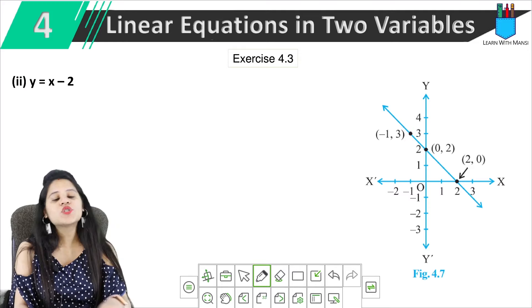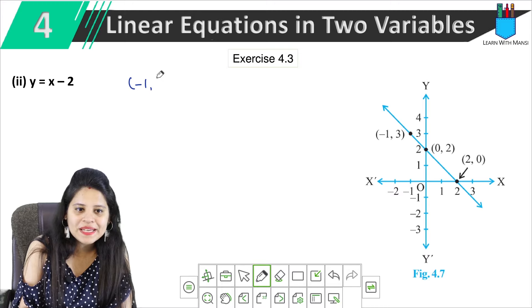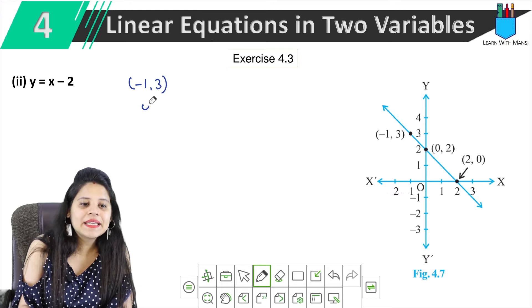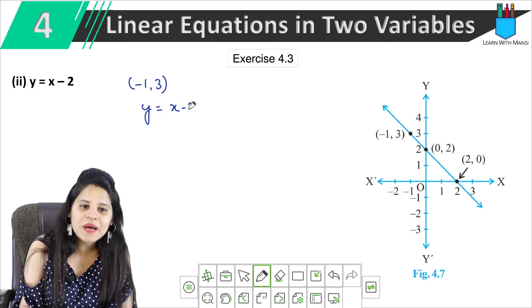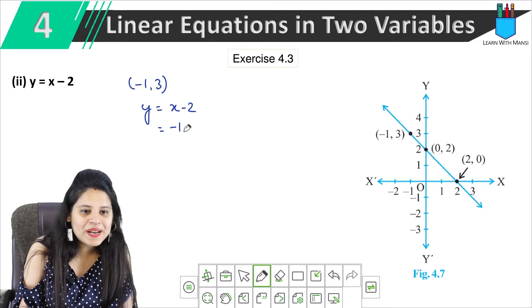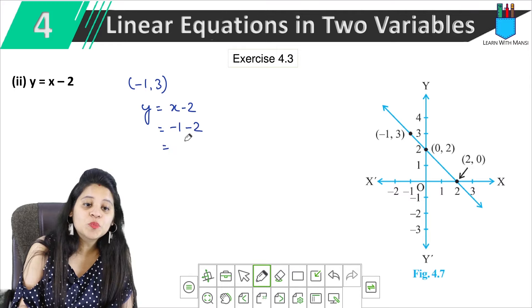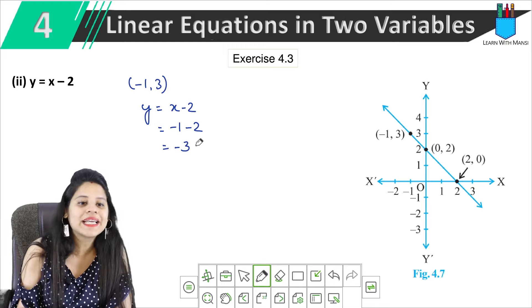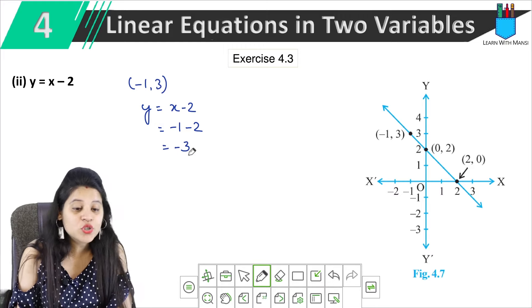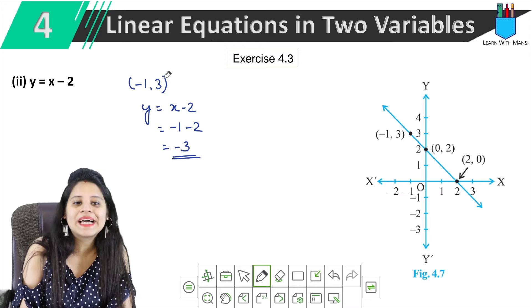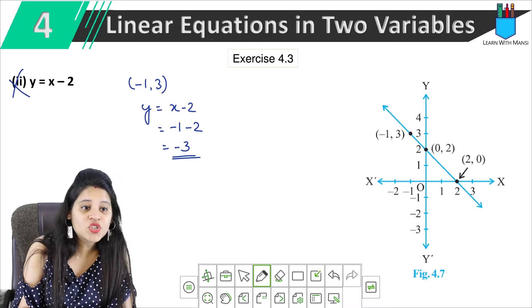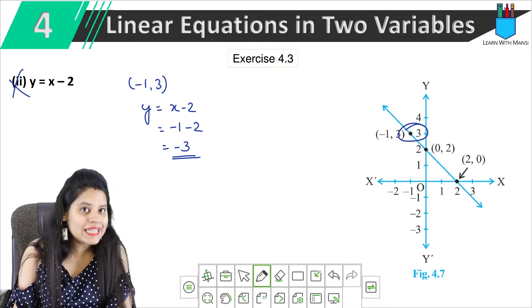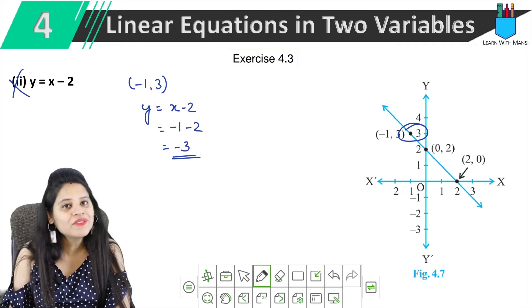Next, y equals to x minus 2. The first point is (-1, 3). We put x equals minus 1 minus 2, which gives minus 3. But y is 3, not minus 3. So this equation also does not satisfy the point, meaning this graph is not y equals to x minus 2.